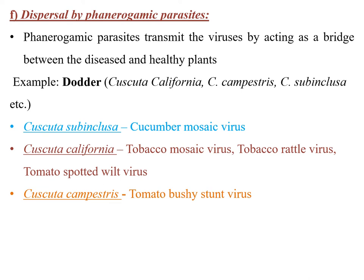Phanerogamic parasites also transmit viruses by acting as a bridge between diseased and healthy plants. Dodder species — Cuscuta subinclusa transmits cucumber mosaic virus; Cuscuta californica transmits tobacco mosaic virus, tobacco rattle virus, and tomato spotted wilt virus; Cuscuta campestris transmits tomato bushy stunt virus (TBSV).